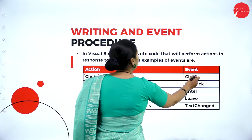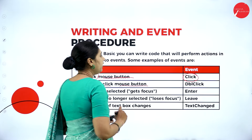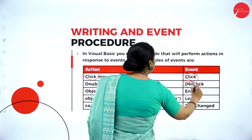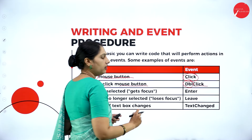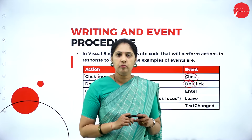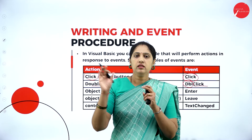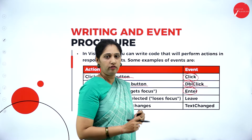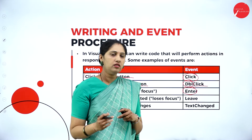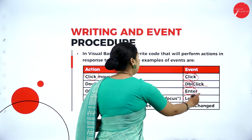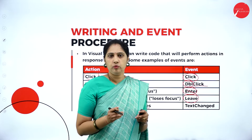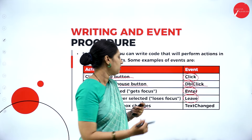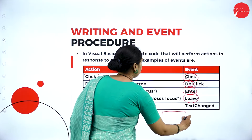With three letters (e.g., BTN clear, LBL title), you can know what the control is, because of the prefix. Now, what is an event? When a program is running, the user can do many things — move the mouse, click the mouse, or enter text. These are all events. Events are nothing but actions; each of these actions is called an event.